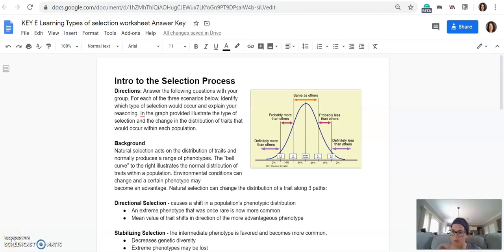Okay, last answer key for this week, the selection process, the types of natural selection handout. So there are three types of natural selection.